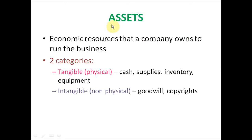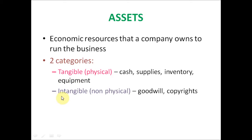Let's look at what assets are. Assets are the economic resources that a company owns to run the business. The two main categories of assets are tangible assets and intangible assets.